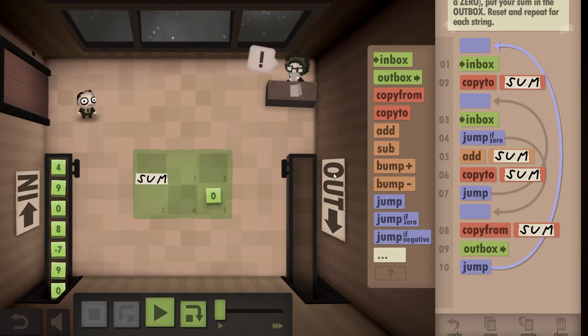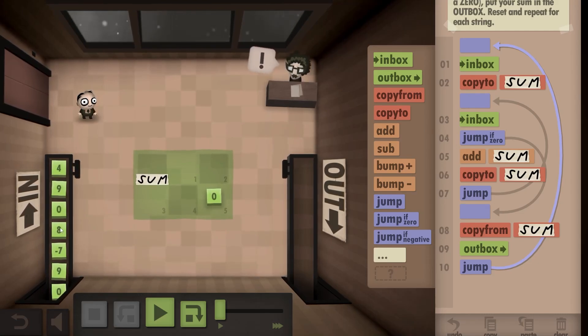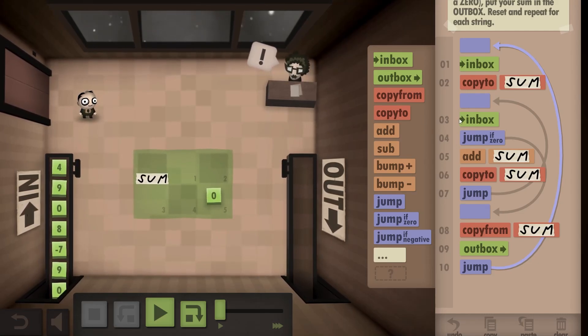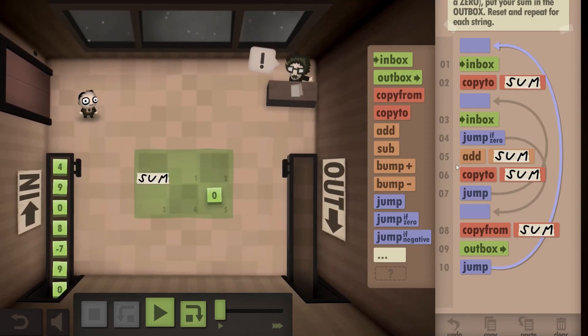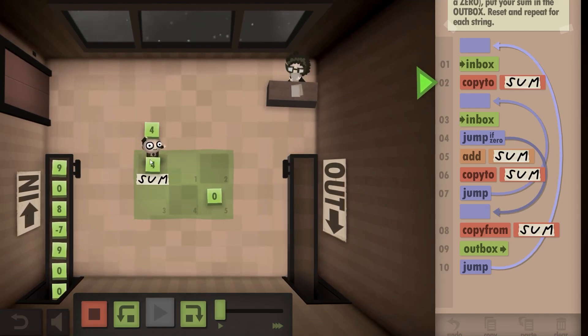There. Now this won't work if there's only one number between two zeros. Because we inbox, copy, inbox again, and then start adding. So I have another plan. But first, let's see if this works at least a bit.